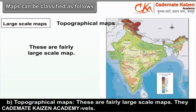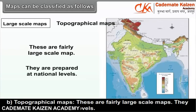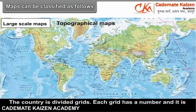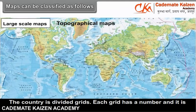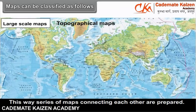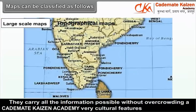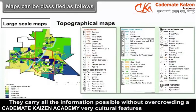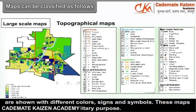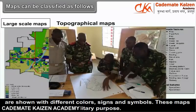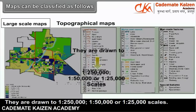B: Topographical maps — these are fairly large-scale maps prepared at the national level. The country is divided into grids, each grid has a number and is further divided. Series of maps connecting each other are prepared. They carry all information possible without overcrowding. Physical as well as cultural features are shown with different colors, signs and symbols. These maps are also very useful for military purposes. They are drawn to scales of 1:2,50,000 or 1:50,000 or 1:25,000.